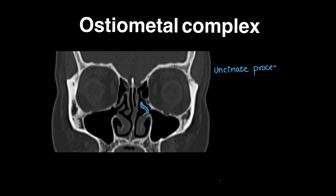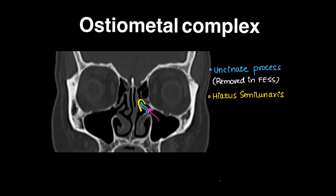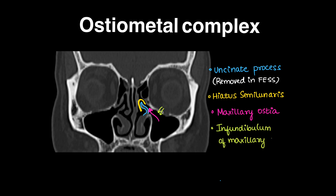This process here is the uncinate process — if you remember from ENT, this is the one which is removed in FESS surgeries. The area around the uncinate process, or this gap, is the hiatus semilunaris. The drainage opening is the maxillary ostia, and the region of the maxillary sinus adjacent to the ostia is the infundibulum of the maxillary sinus.